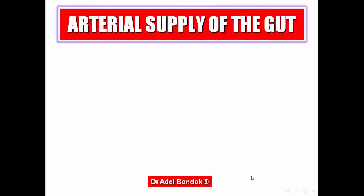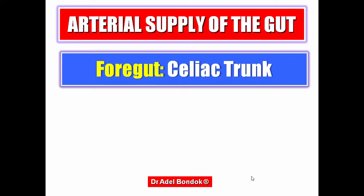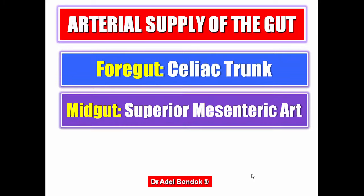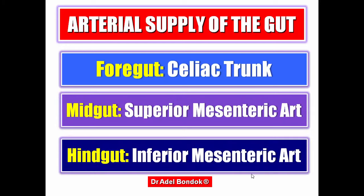Good morning! I will talk about the arterial supply of the gastrointestinal tract. The gastrointestinal tract is divided into three parts: foregut, midgut, and hindgut. Each part has its specific artery. The foregut is supplied by the celiac trunk or celiac artery. The midgut is supplied by the superior mesenteric artery. The hindgut is supplied by the inferior mesenteric artery.